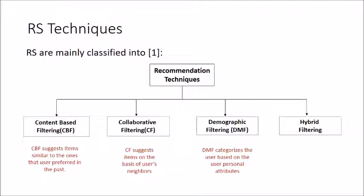Demographic filtering is a type of collaborative filtering that uses demographic information of users. Demographic information can include the user's city, age, occupation, or gender. If recommendations are made based on this demographic information, it is called demographic filtering. For example, if a product is meant only for female candidates, then recommendations are based on the female category — that is the demographic information.